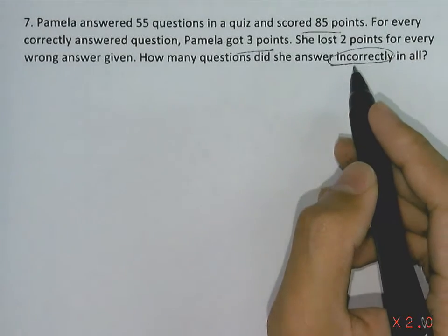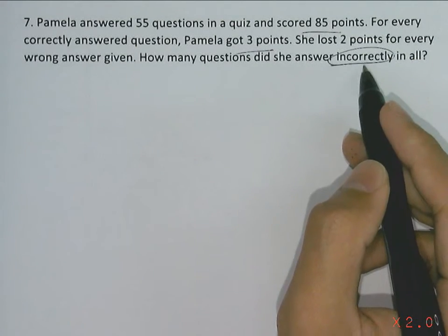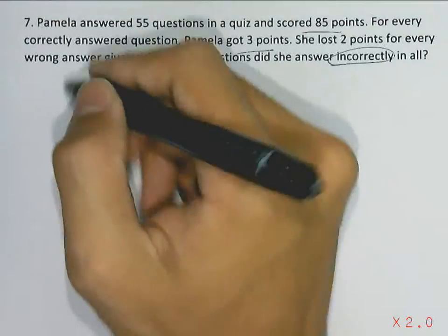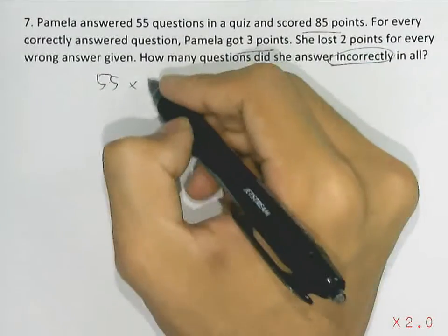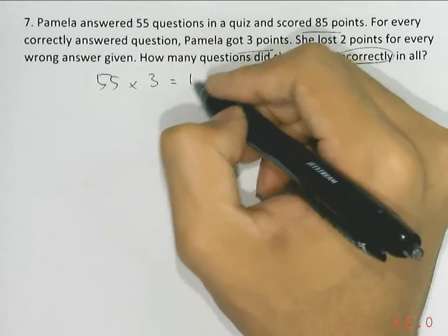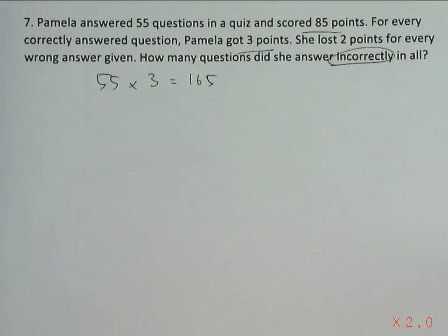Since they are looking for the questions answered incorrectly, we can assume that she answered all of the questions correctly. So if all 55 were answered correctly, she would have earned 3 points for each question. So that's a total of 55 multiplying by 3, giving us 165 points.